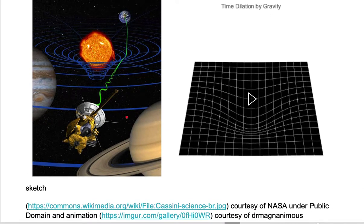Here we have a sketch on the left of the Cassini space probe near Saturn. The Cassini space probe is sending out a signal.